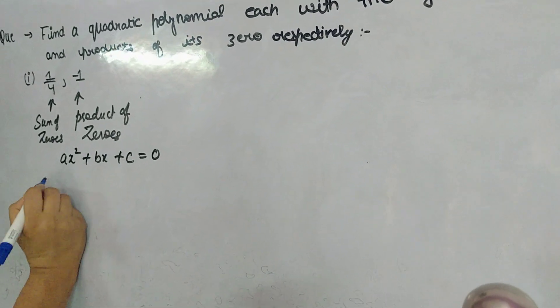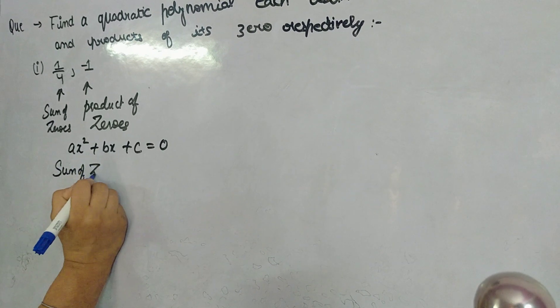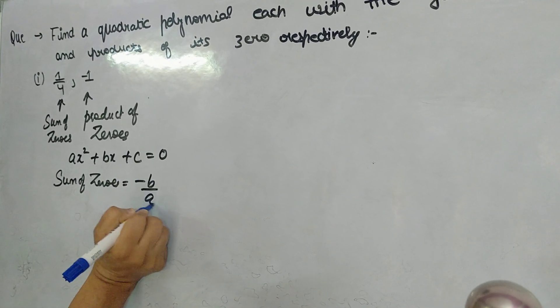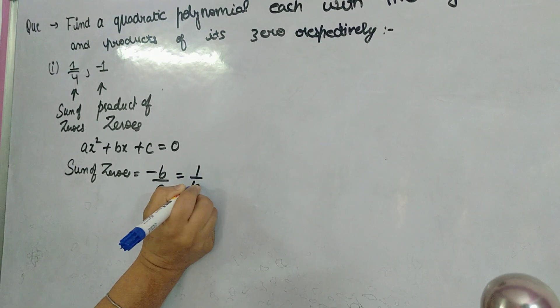What is sum of zeros? Sum of zeros is minus b over a. Its value is given as 1 by 4.